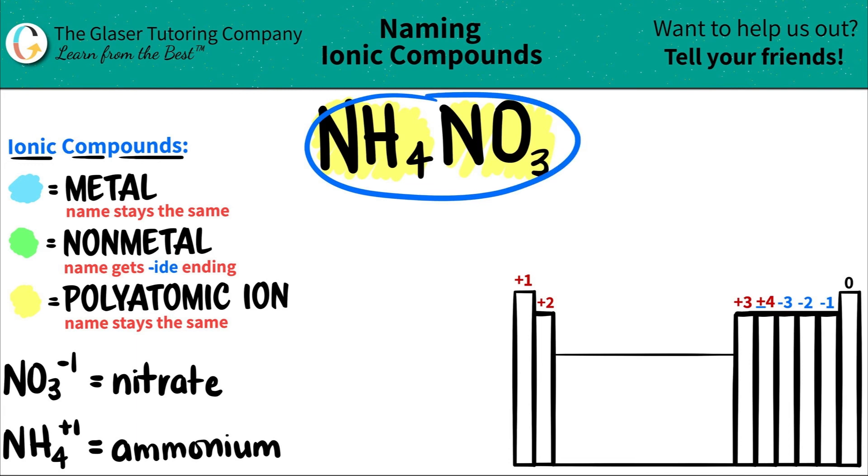Now we just have to name this. But the good thing is that all polyatomic ions, their names always stay exactly the same. You don't have to change them, but you just got to memorize them. So NH4 is always called ammonium. I'm going to write ammonium first.